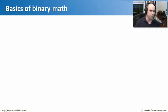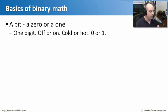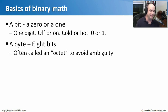The basics of binary math are really quite simple. A bit is the very basic unit of binary, and a bit is either a zero or a one. It's a single digit — either on or off, either zero or one. There are no spaces in between, no decimal places. There's either a zero in a place or a one in a place, and we build everything around that single idea.